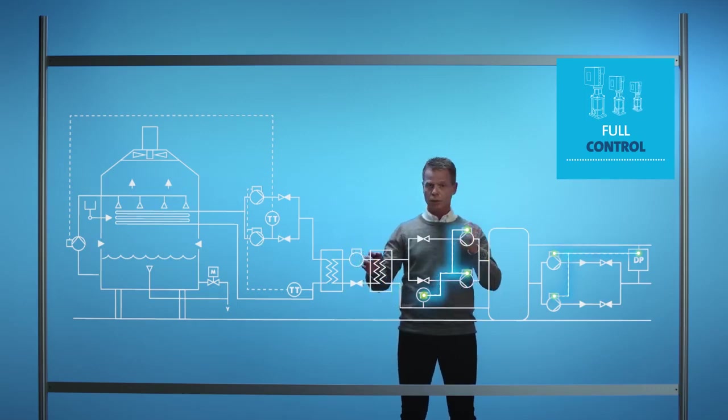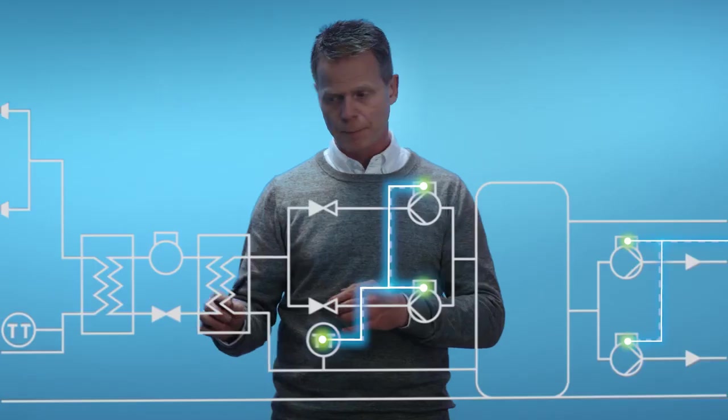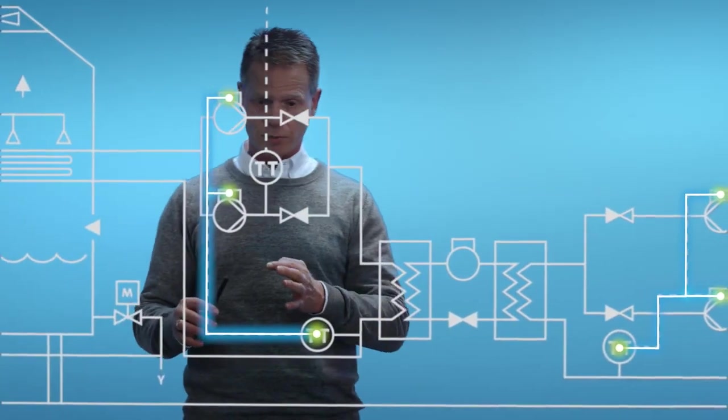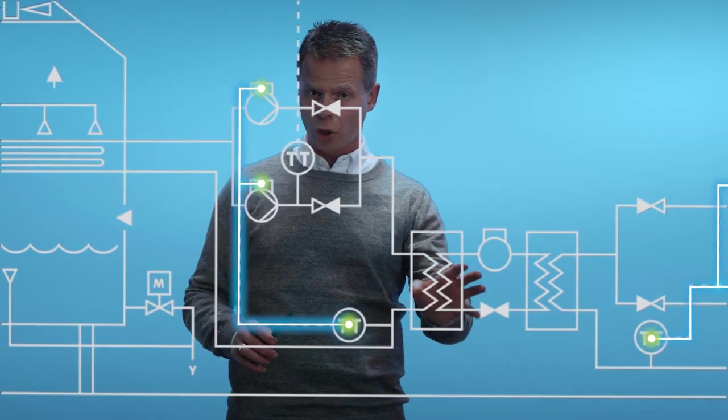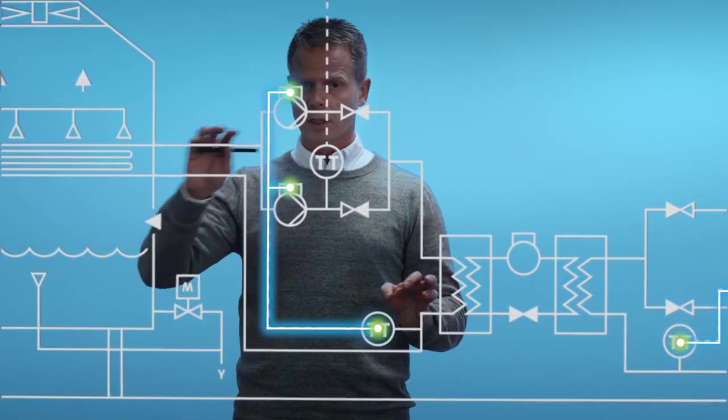can start and stop the pumps when the chiller is not running and thereby save energy. Here we have the condenser pumps. The condenser pumps are circulating the hot water from your condenser into your cooling tower. These pumps